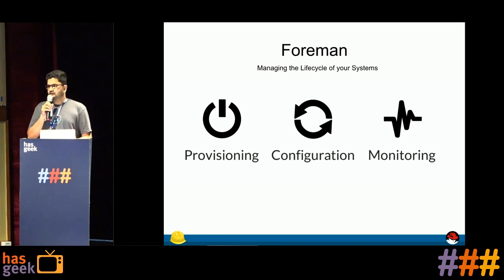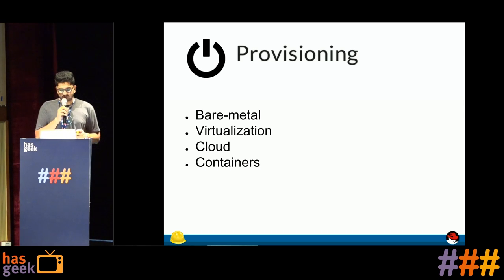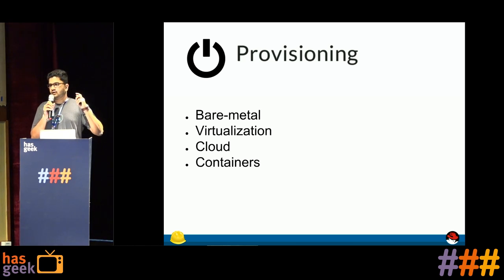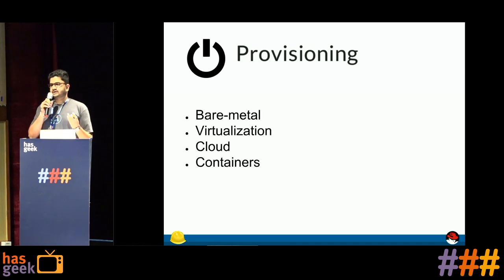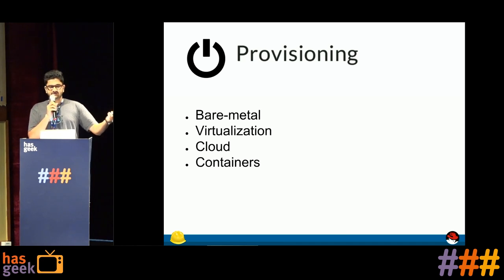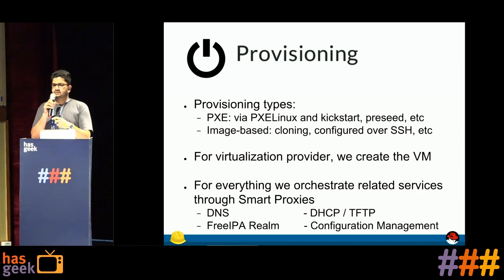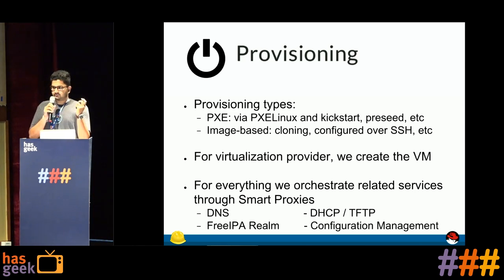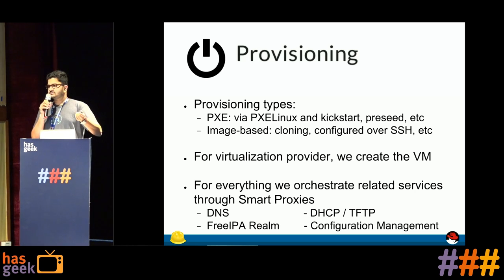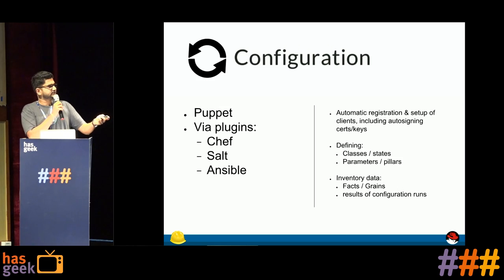The three major functionalities of Foreman are provisioning, configuring, and monitoring. For provisioning, Foreman provides all types of provisioning — on bare metal, cloud, virtualization, and containers. We do both PXE and PXE-less provisioning; PXE-less provisioning is done via image-based provisioning. We also provision virtual machines, and to provide DHCP, DNS, and TFTP services we have something called smart proxies.